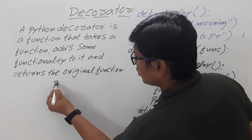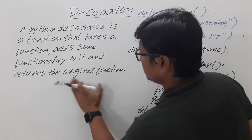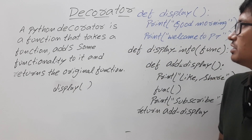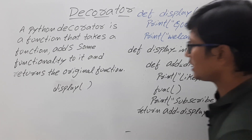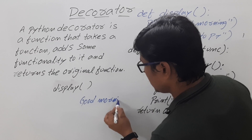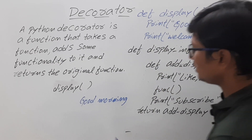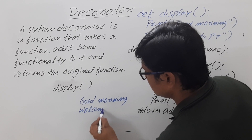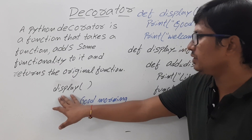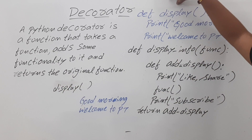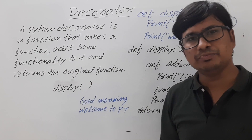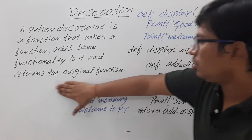Now, suppose I just call the display function — what will be the output? I can expect the output as 'Good morning' and then 'Welcome to Panika tutorials'. This is very simple. If you call a function the control goes to the function definition, and the statements in the body of the function are executed. Now we will add complexity by adding a few more lines.